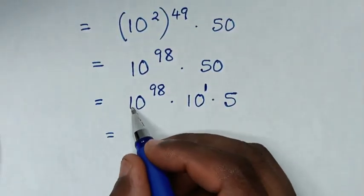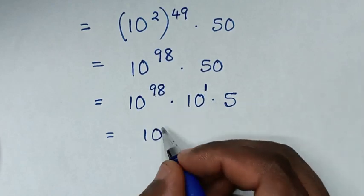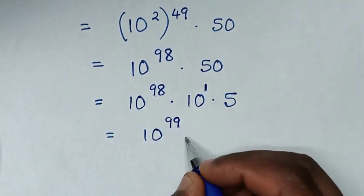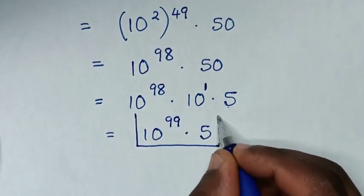So it will be equal to, same base of 10, power of 98 plus 1 is power of 99 then times 5. So this is our final answer.